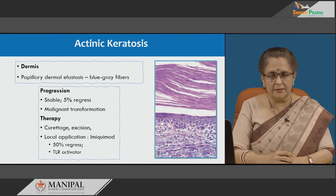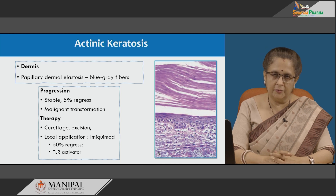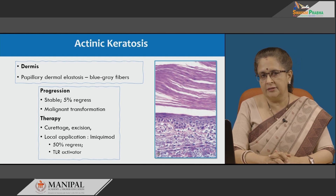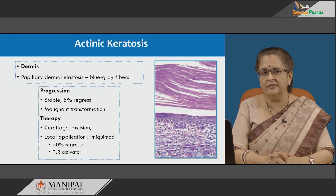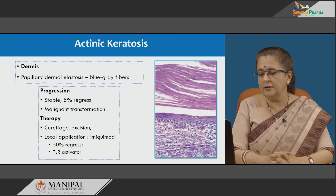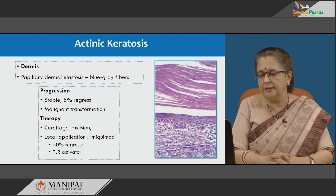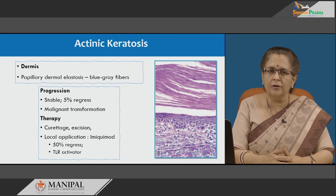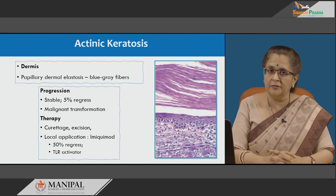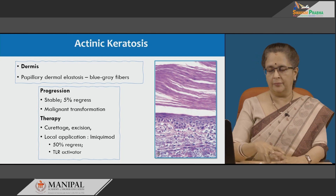How do these lesions progress? Some are stable, 5 percent will regress, and some can undergo malignant transformation, but most of the time the lesion is removed by curettage, freezing, or excision. Additionally, local application of imiquimod has been successful, mainly because it activates the toll-like receptor, thereby activating cutaneous innate immunity, which removes atypical or pre-malignant cells. About 50 percent of these conditions treated with imiquimod have shown regression, which is a very positive aspect.